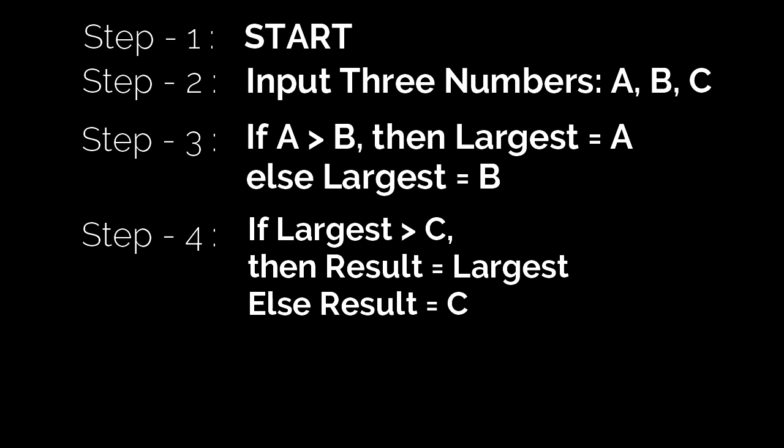As we have compared the largest, that is the result of the previous comparison, with the remaining value, that is C, and whatever we get is nothing but the largest among the three numbers, we store that value with the name called result. So, after this step, we are able to find the largest among the three numbers.